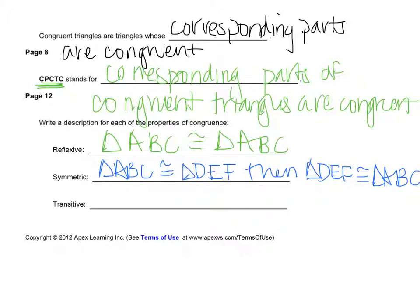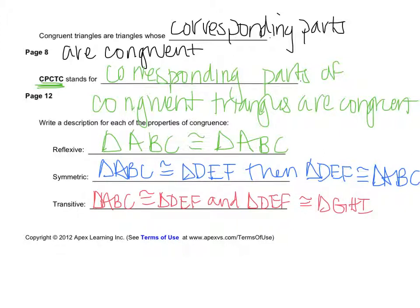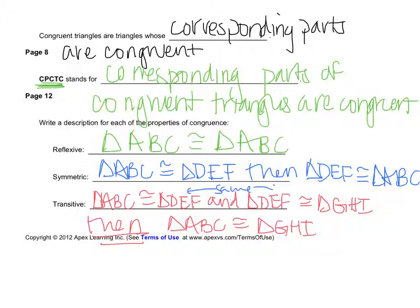The transitive property is a little more complicated. If you remember from Unit 1, we talked about syllogisms — if you live in Dallas, then you live in Texas; if you live in Texas, then you live in the United States; so we can jump straight to: if you live in Dallas, then you live in the United States. The transitive property says: if triangle ABC is congruent to triangle DEF, and triangle DEF is congruent to triangle GHI, then triangle ABC is congruent to triangle GHI. You can only do this if those middle two triangles are the same.